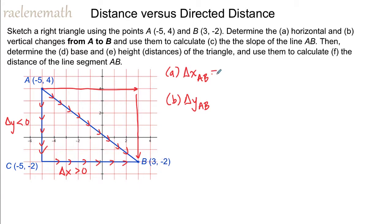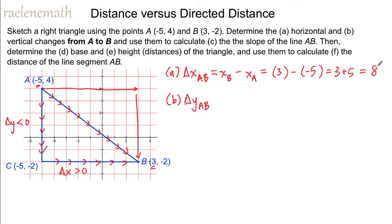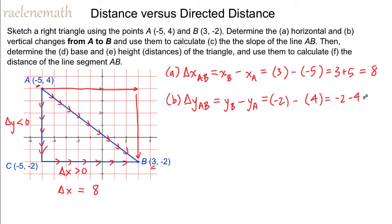To calculate the change, we take the final minus the initial. The final x coordinate is the x coordinate at point B, and we subtract the x coordinate at point A. When we do this, we have 3 subtract negative 5, which gives us 3 plus 5, which is 8. So delta x is equal to 8. Similarly, we calculate the change in y as y final minus y initial. The y coordinate at point B is negative 2, and then we subtract the y coordinate at point A, which is 4. This gives us negative 2 minus 4, which is equal to negative 6. So delta y is equal to negative 6, which makes sense since the y coordinate is decreasing.